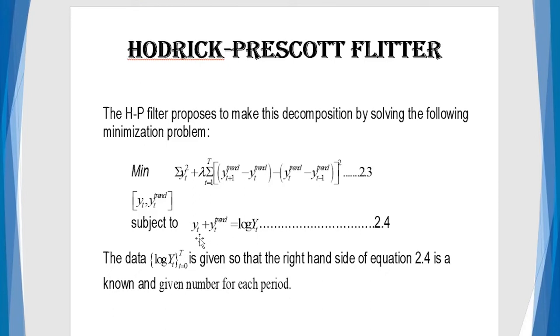look at this, you recall this is our definition earlier. That is, the definition that we had that to separate our data into the two components. That's optimization or minimization subject to the constraints. So, if the data is given as such, you see that the right side of the equation 2.4 is a known and given number for each period.